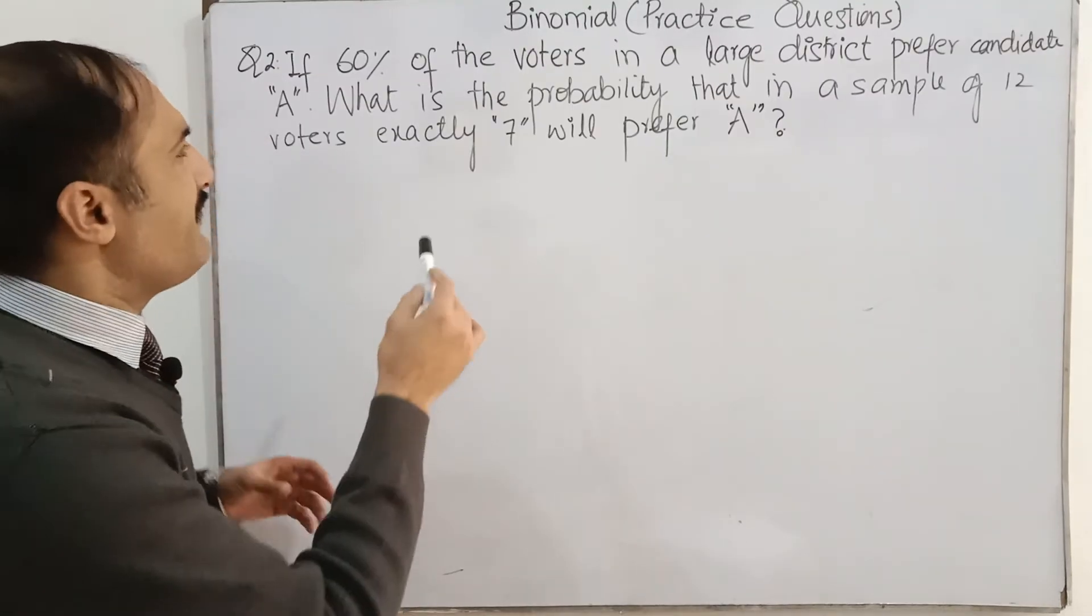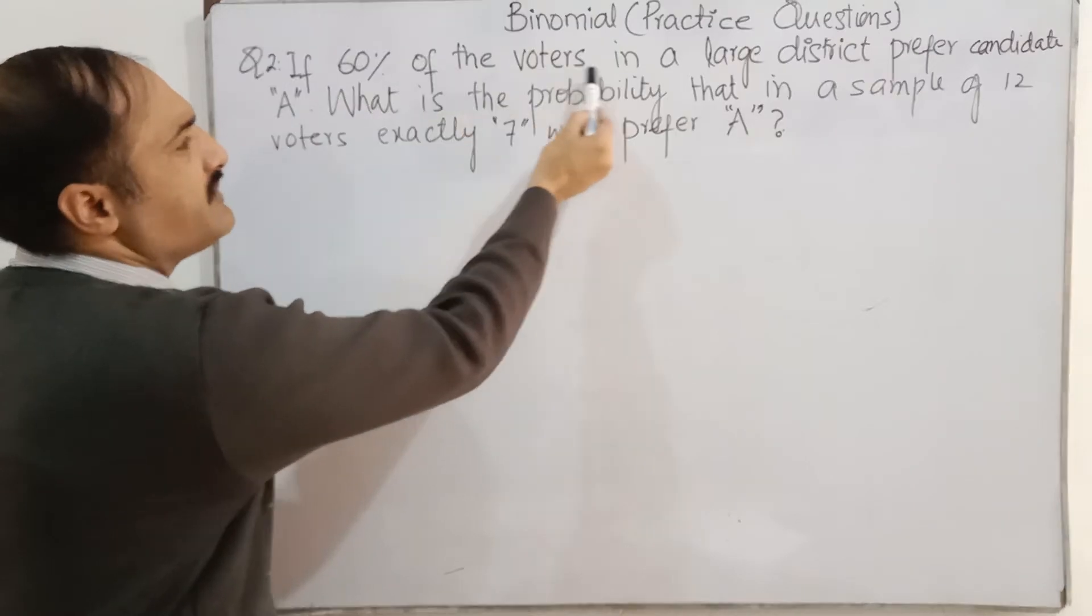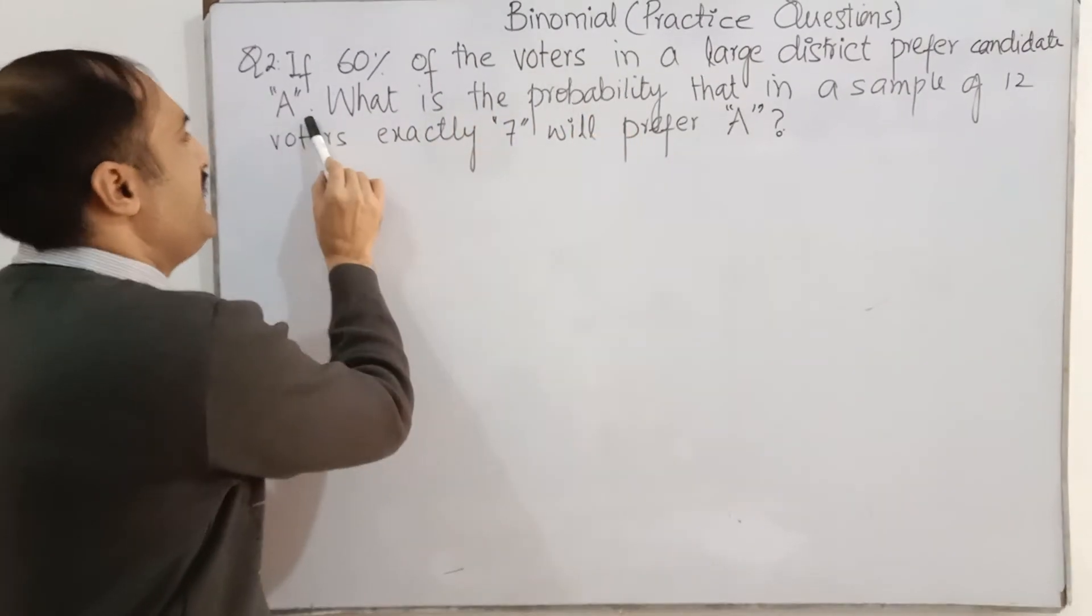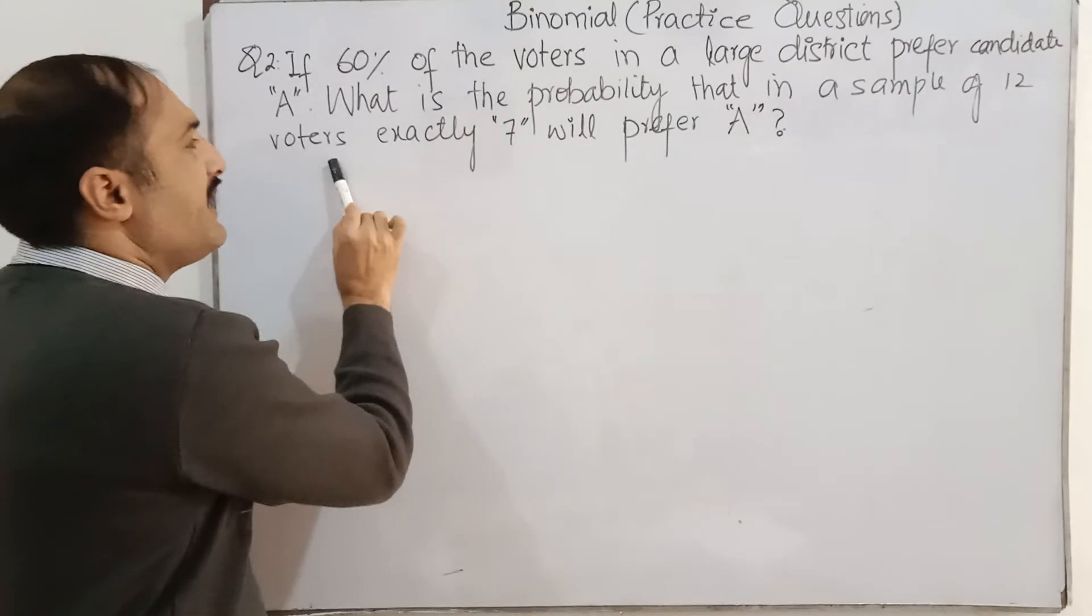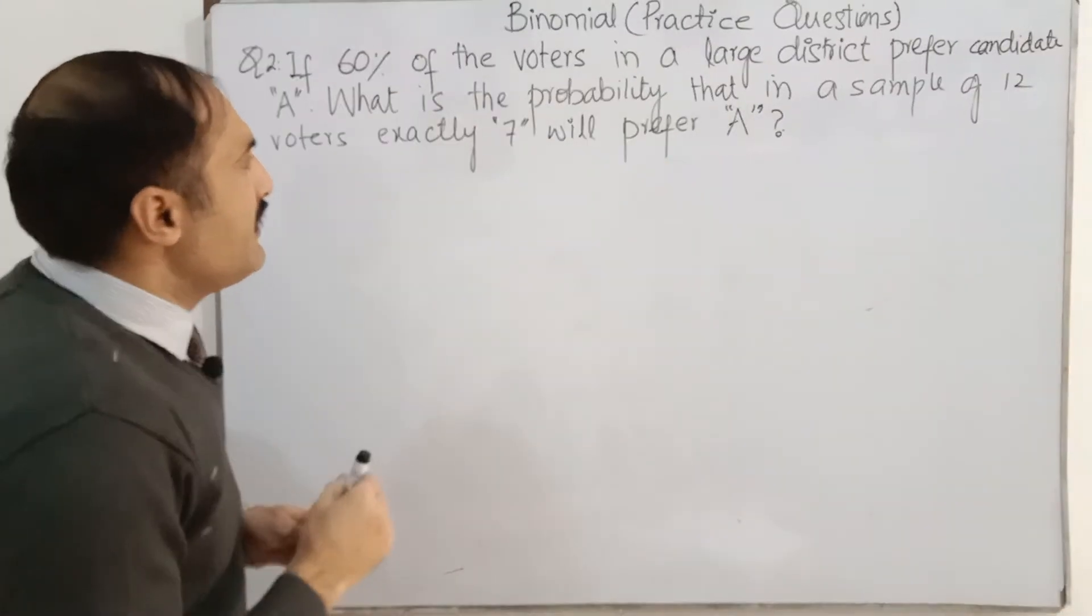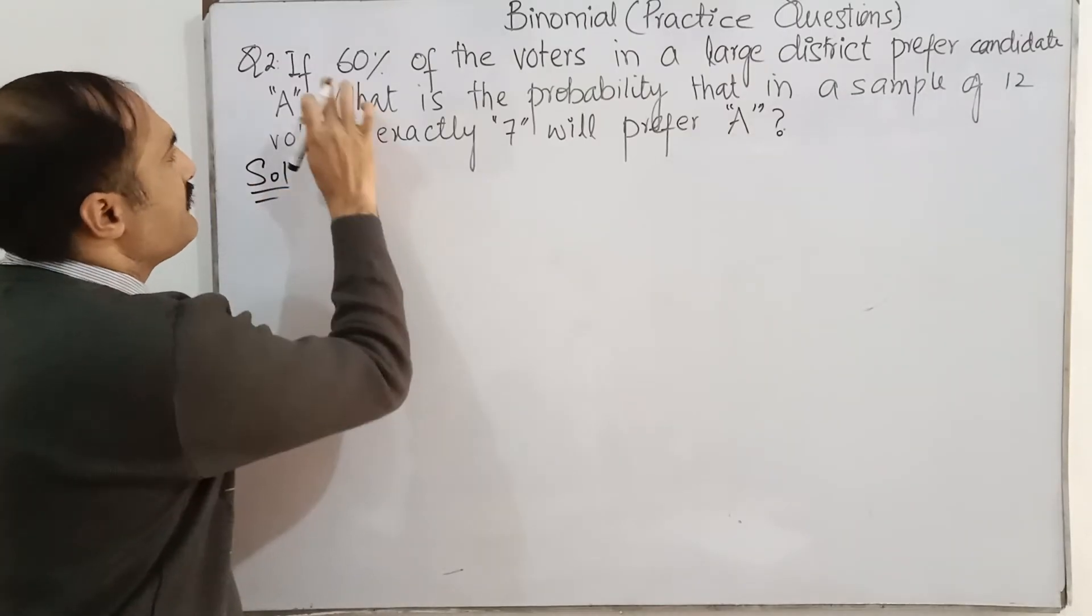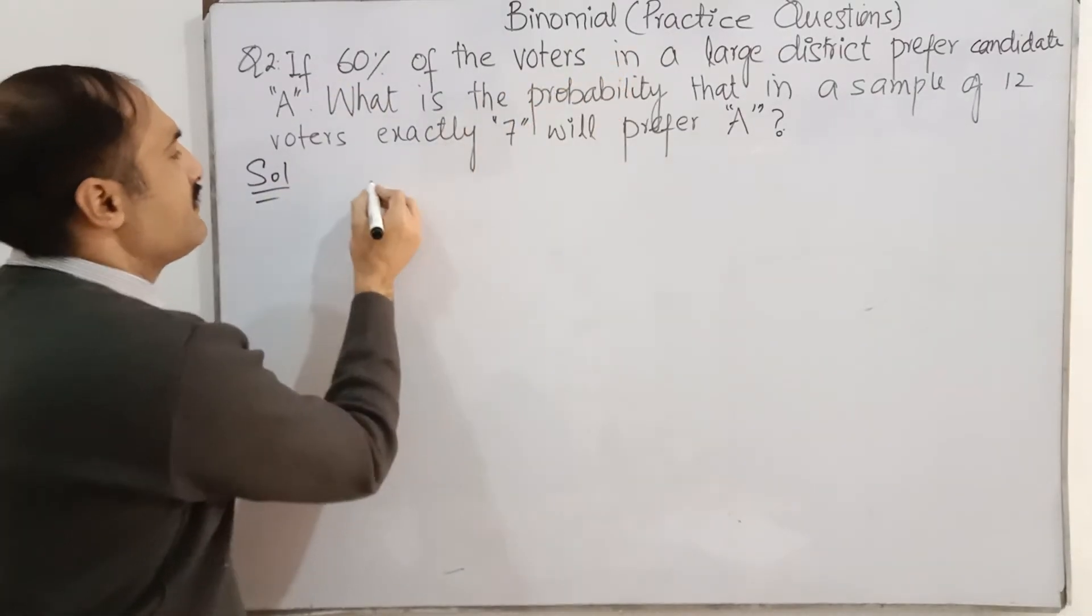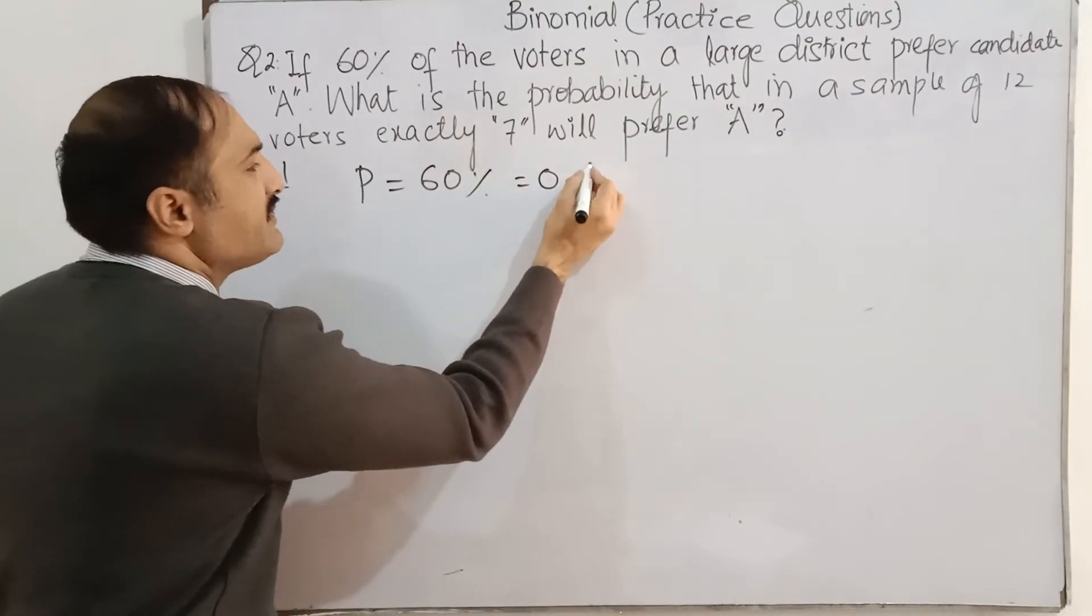So, dear students, we have already this question. If 60% of the voters in a large district prefer candidate A, what is the probability that in a sample of 12 voters, exactly 7 will prefer candidate A? What is the probability of success? 60% of the voters. Probability of success P is equal to 60% means 0.60.